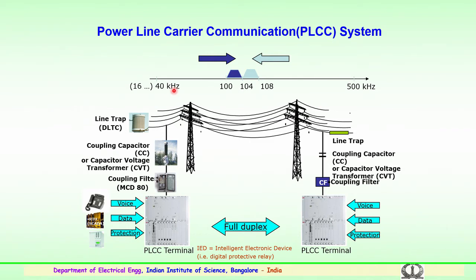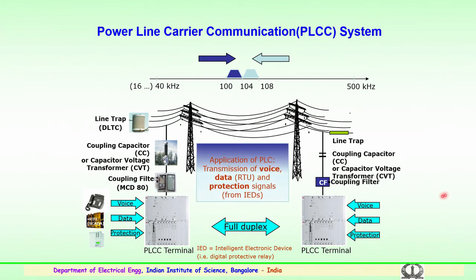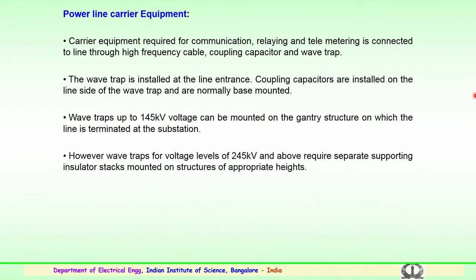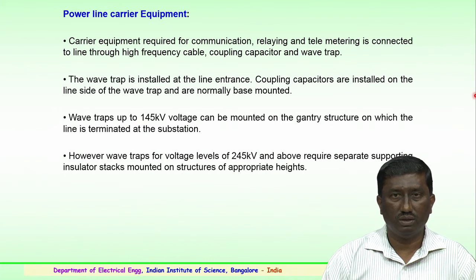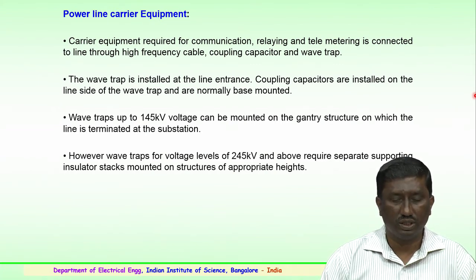Employing several intelligent electronic devices (IEDs) and digital protective relays, this power line carrier communication is very useful in power networks at very high voltage and ultra high voltage ranges for communication aspects. The application of power line communication is mainly for transmission of voice data. This data could be transferred through the remote telemetry units and the protection signals from the intelligent electronic devices which have been used for SCADA or smart grid applications. Power line carrier equipment is one of the important components for data acquisition, helping the communication aspect using the power lines.